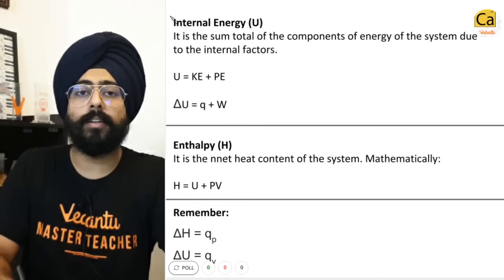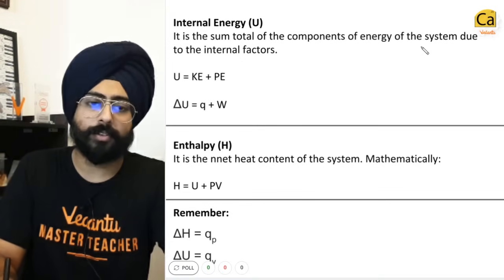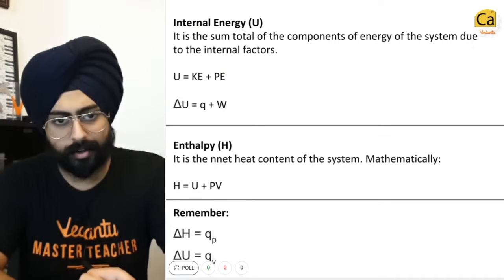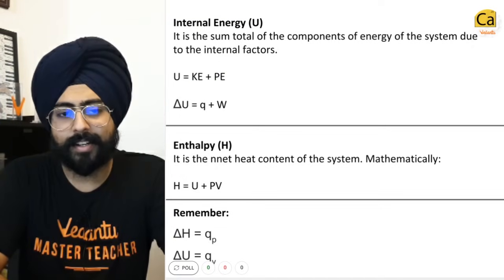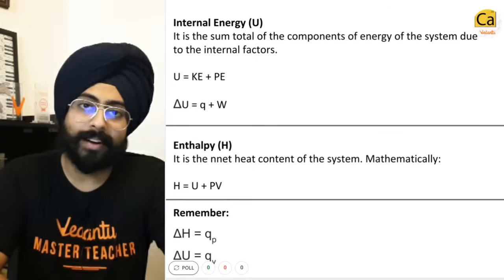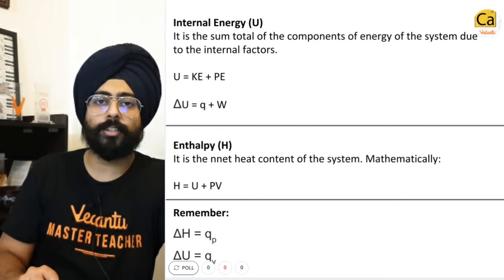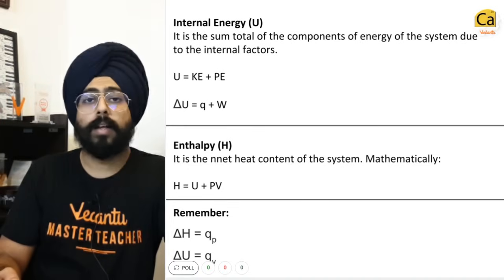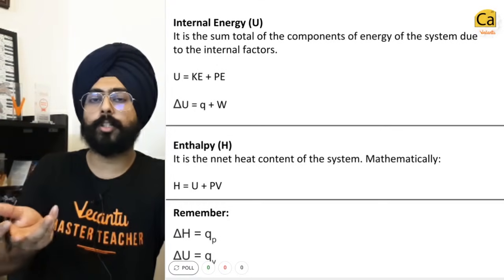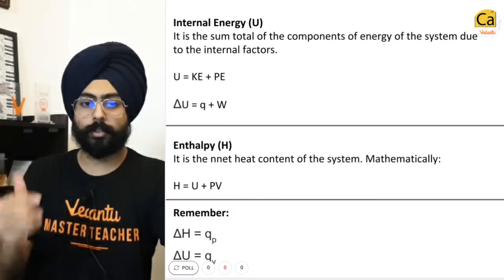Internal energy is the sum total of the components of energy of the system due to internal factors — kinetic energy plus potential energy of the internal components. For an ideal gas, there are no intermolecular forces, so there is no potential energy. Therefore, the internal energy of an ideal gas is just the kinetic energy of the gaseous particles, which depends only on temperature. So for an ideal gas, internal energy depends only on temperature.